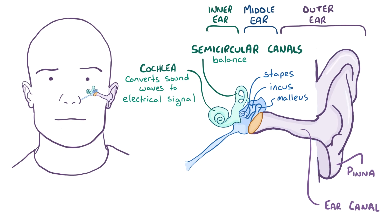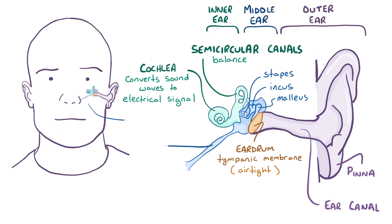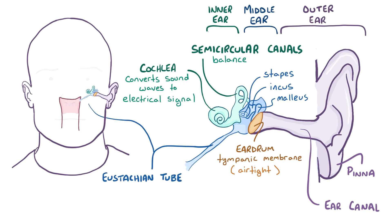Between the outer and middle ear is an eardrum, also called the tympanic membrane, so no air passes between the two areas. But the middle ear does have another possible outlet called the eustachian tube, which acts like a valve connecting the middle ear to the nasopharynx.